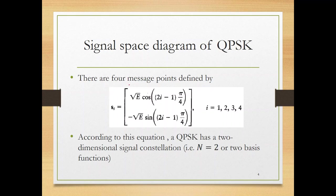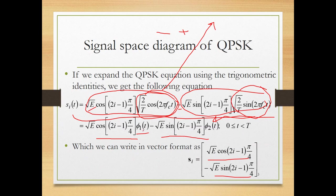For the four values of i (1, 2, 3, 4), you get four different possible signal vectors. QPSK has a two-dimensional signal constellation because we have φ₁ (cosine) and φ₂ (sine) as the two basis functions.